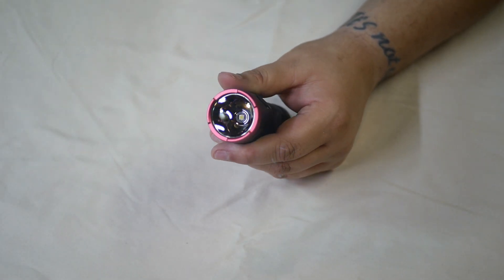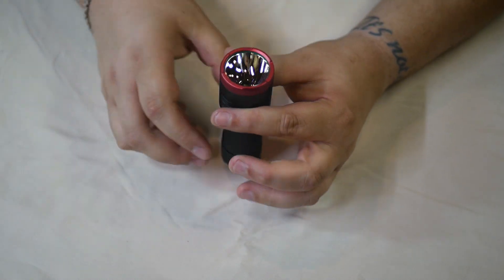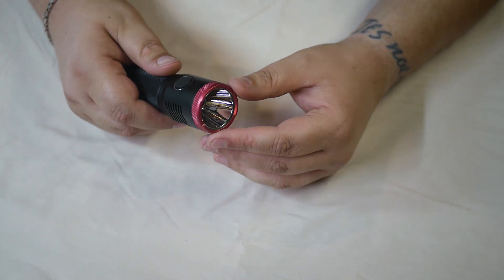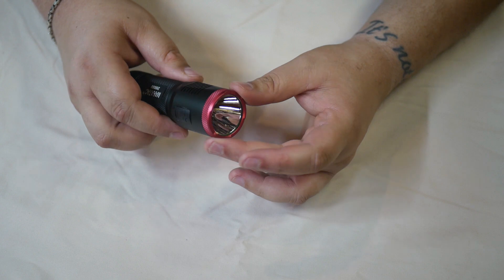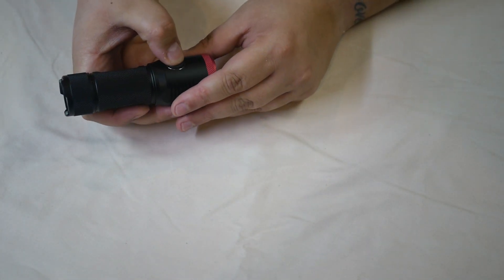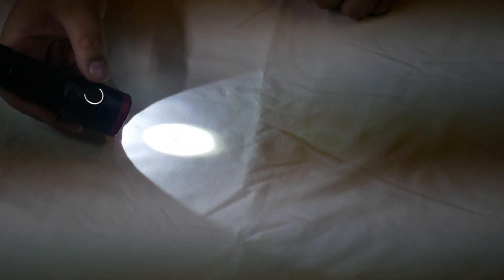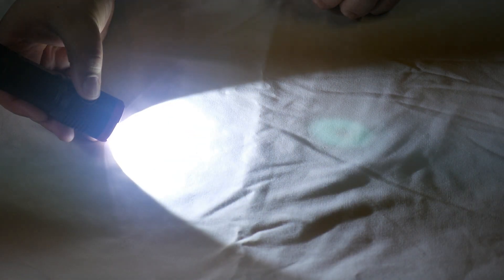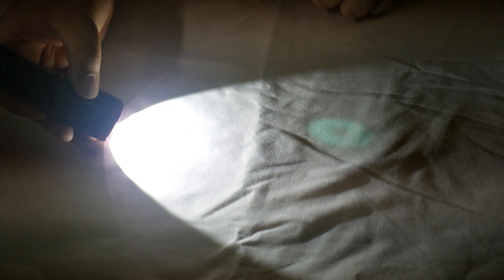It's got this nice red aircraft-grade aluminum ring here. And like I said, it's a four-mode operation, so it's going to start on low, medium, high, and then you've got your turbo, which is the full 2020, and that is blinding. And to turn it off you just hold this down for two seconds.